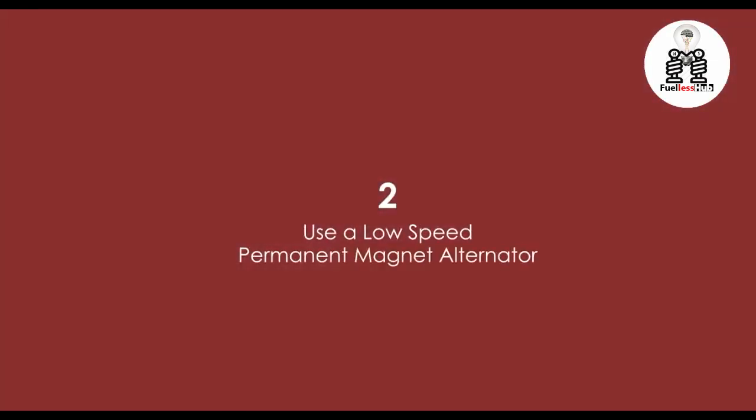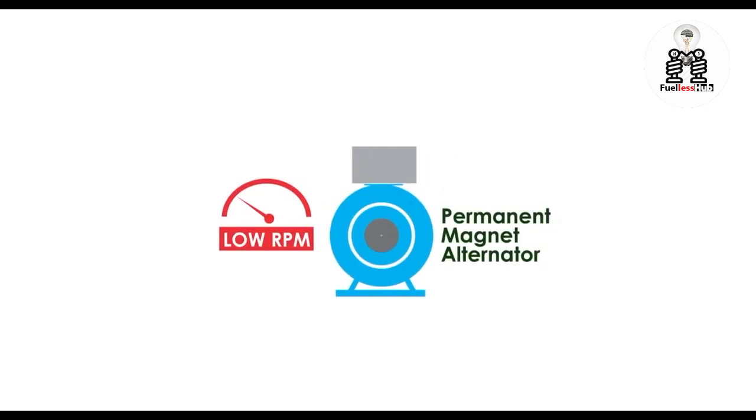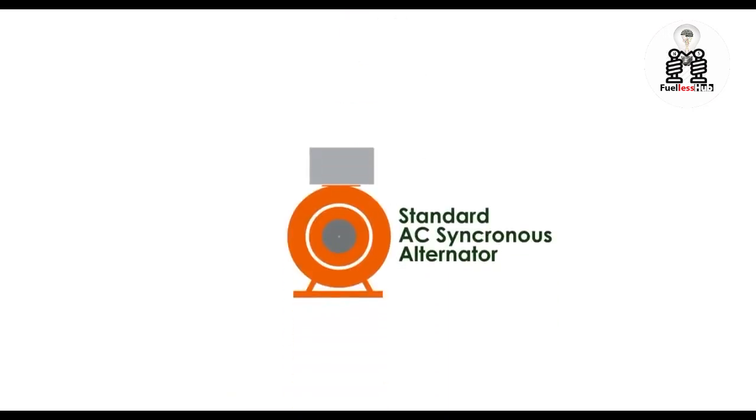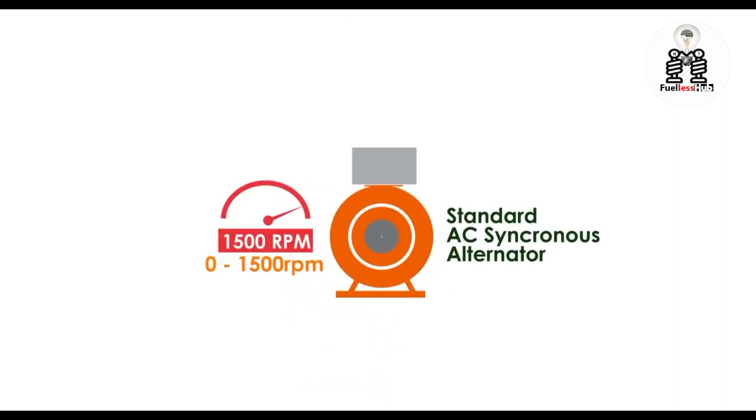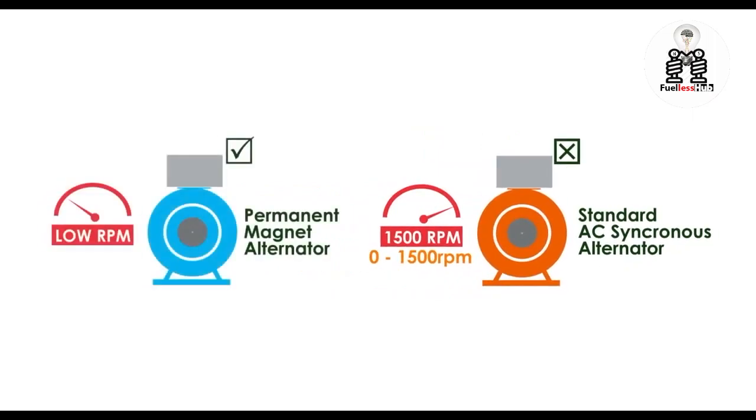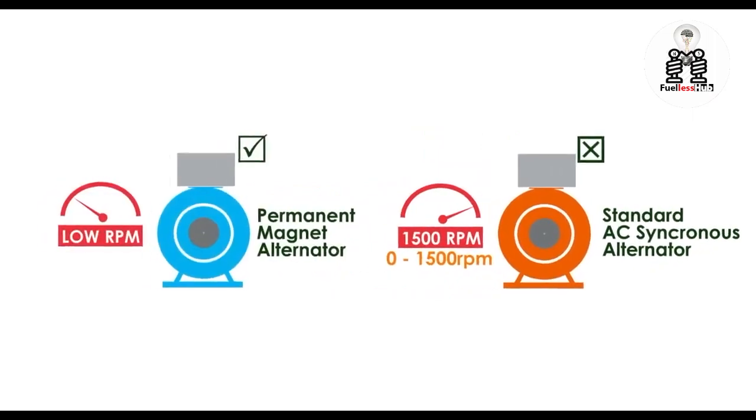Point number two: a low RPM permanent magnet alternator is your best bet. Otherwise you'll have a hard time getting the system to operate at the speed required by most AC synchronous generators. Standard alternators require speeds of about 1500 RPMs or thereabout to even remotely begin generating power. Permanent magnet alternators on the other hand, used in most wind and water generating systems, have typical speeds of between zero and 400 RPM.